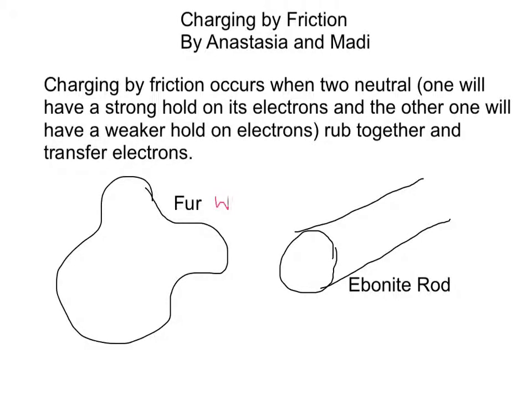All objects have either a strong or weak hold on their electrons. In this case, the fur has a weak hold on its electrons, and the ebonite rod has a strong hold on its electrons.